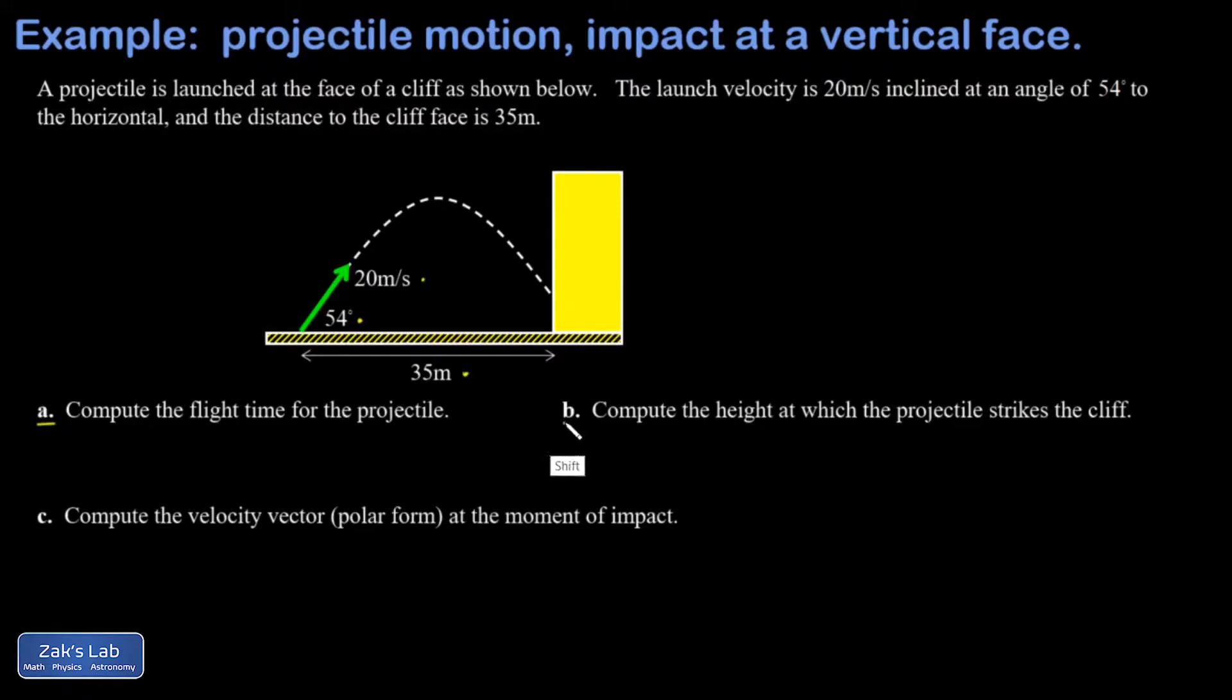We're asked three questions: compute the flight time for the projectile, get the height at which it hits the cliff face, and get the velocity vector when it hits the cliff face. The velocity vector points down into the right—I'll call that v final vector. It's an open question whether this projectile is impacting the cliff face on its way down or on its way up. It depends on how the numbers turn out, and I'll comment on how we decide which one it is.